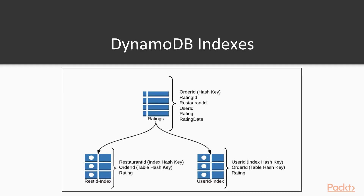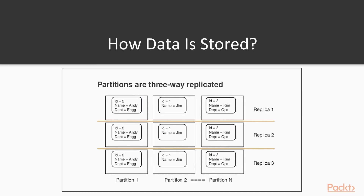Secondary indexes are needed if you want to efficiently query DynamoDB tables by other than the partition and sort keys. Each index is basically another small DynamoDB table that points back to the source table. Data in DynamoDB is stored in three different availability zones per table and partition.